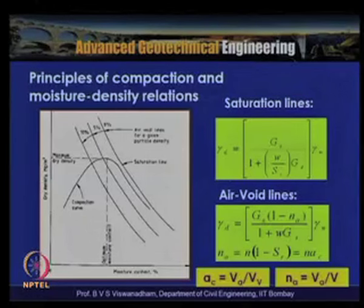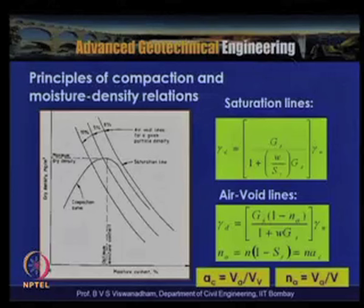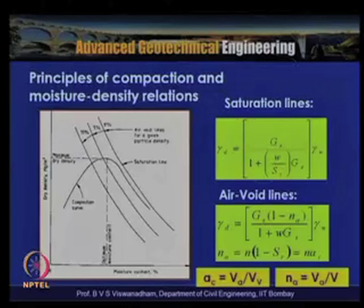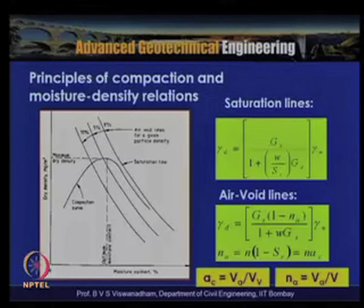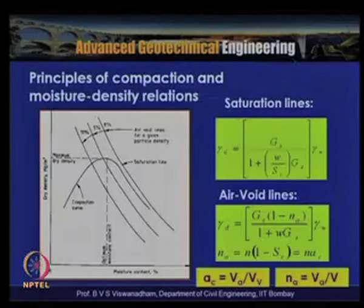At optimum moisture content and maximum dry unit weight, the soil typically has 80–90% degree of saturation. Air void lines can be drawn using: γ_d = Gs(1 – nₐ)·γ_w / (1 + w·Gs), where nₐ = n(1 – Sᵣ) is the air content. Using the general saturation line equation γ_d = Gs·γ_w(1 + w·Gs/Sᵣ) for different Sᵣ values, these lines can be plotted.